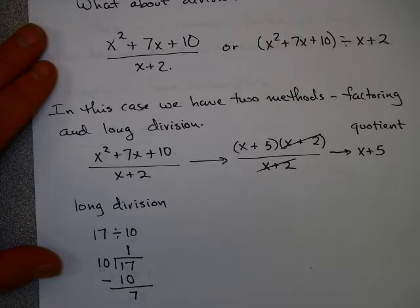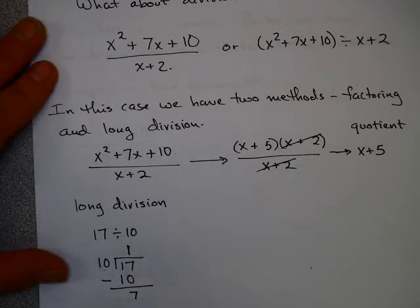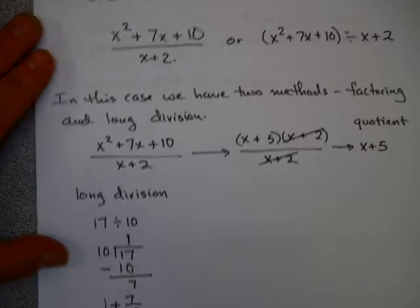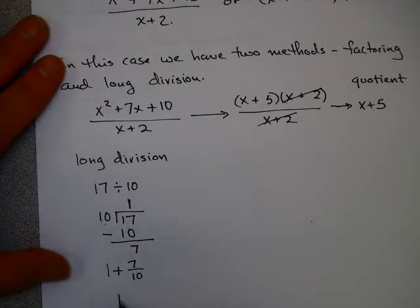Since 7 is less than 10, you might say the answer is 1 remainder 7, or better yet, 1 plus 7 tenths, which back in arithmetic you just wrote this way.